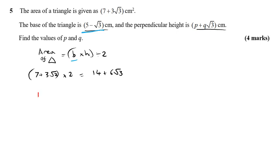So the calculation I'm doing now is 14 plus six root three divided by five minus root three. And to calculate this, we're simply going to rationalize the denominator, which means I'm going to multiply denominator and numerator by five plus root three.